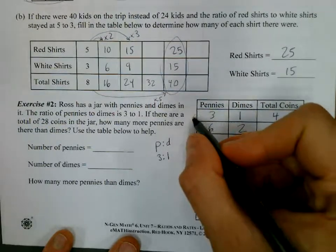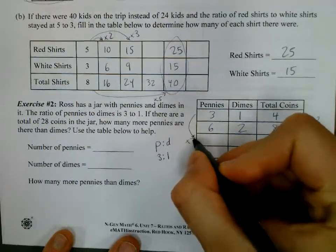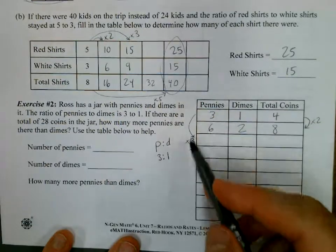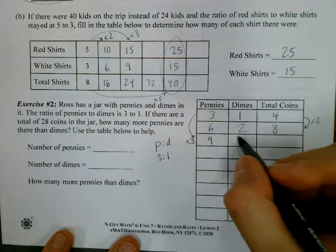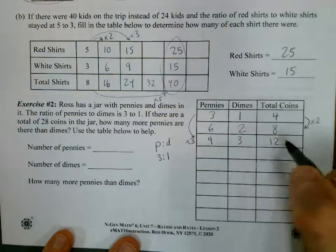Okay, so now let's do a times three row right here. So three times three is nine. One times three is three. And that's 12.